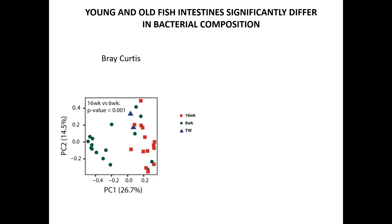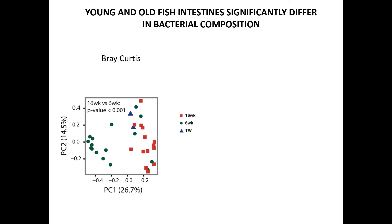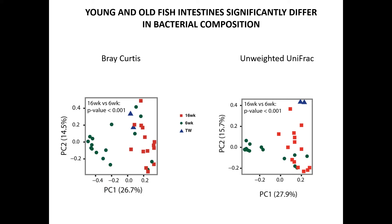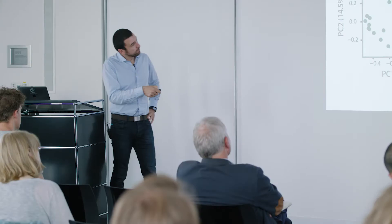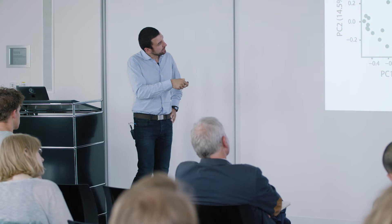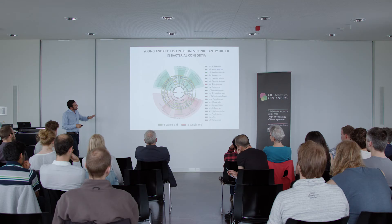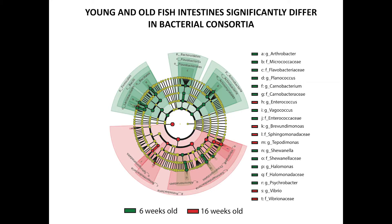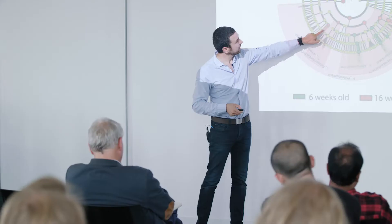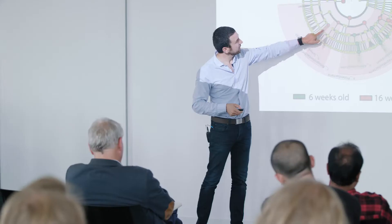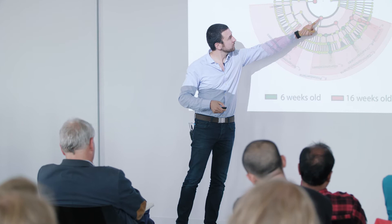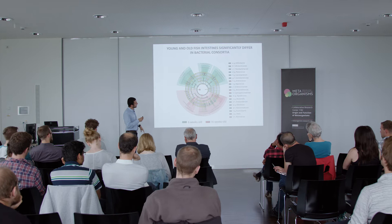We built a phylogeny of microbes associated with either old or young killifish. On this phylogenetic tree, red dots are taxa associated with old killifish and green dots are taxa associated with young killifish. There is a clear separation: older killifish are associated with more proteobacteria, while younger killifish are enriched with Firmicutes, Bacteroidetes, and actinobacteria. Using LEfSe functional metagenomics analysis, we can get insights into function: old-associated microbes are more associated with disease terms, while young-associated microbes have a more metabolic function.